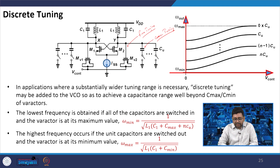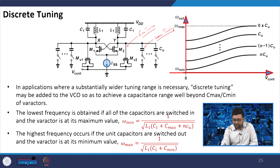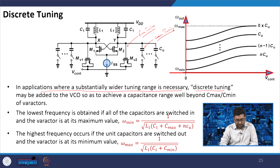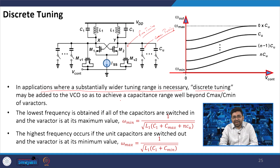With N × C_u, N number of capacitors can be added. When the first capacitor is switched on, V_control adjusts the oscillation frequency within that band. Then another capacitor can be switched on for the next band. In applications where a substantially wider tuning range is necessary, this discrete tuning method can be used.